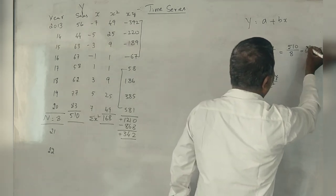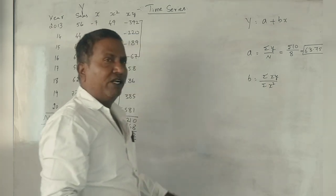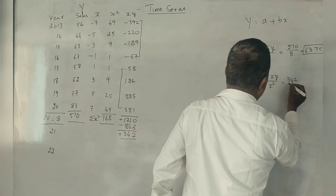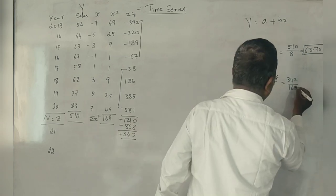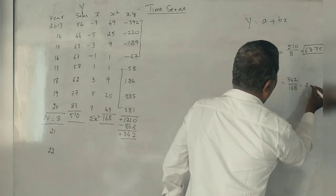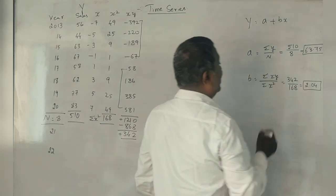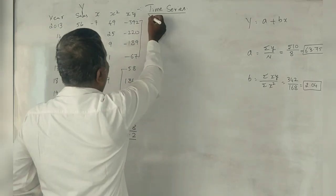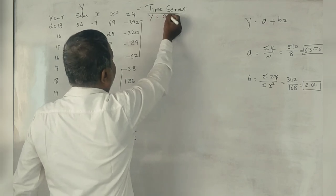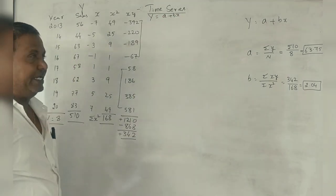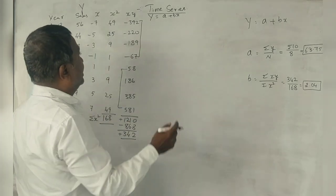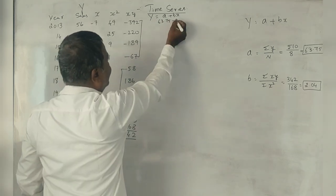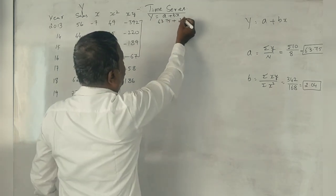A equals summation Y divided by N, which equals 510 divided by 8 equals 63.75. This is the answer. A we got as 63.75. B equals 342 divided by 168 equals 2.04. Now we have to prove. What is A and what is B? The equation is Y equals A plus BX.